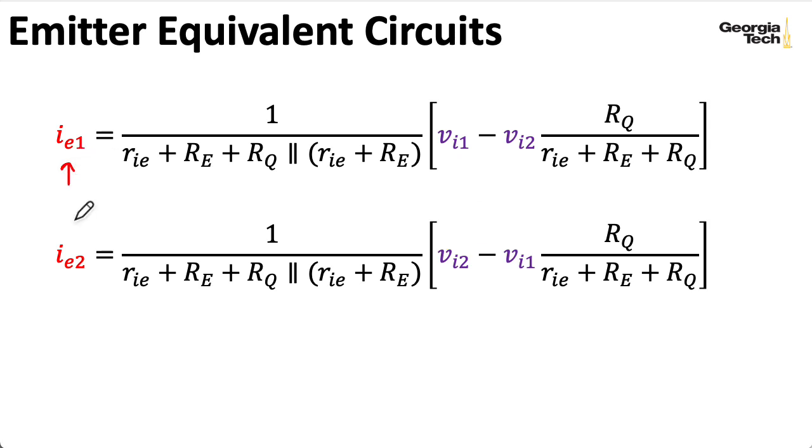So by symmetry, I can write what IE2 is by just exchanging the rules of Vi1 and Vi2. Notice that if I look at IE1 and IE2 individually, this formula isn't balanced. I have this RQ over RIE plus RE plus RQ factor sitting here on one of the voltages.